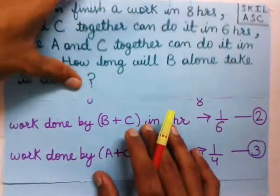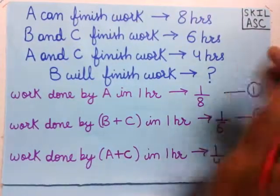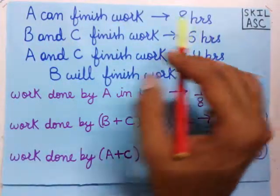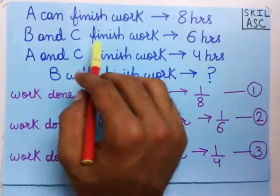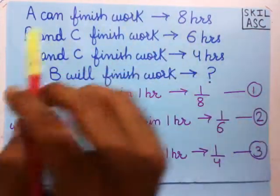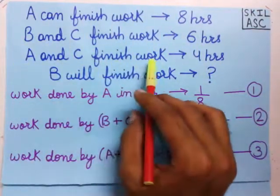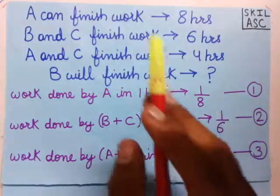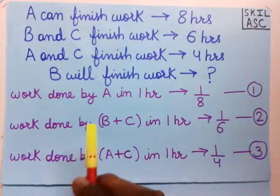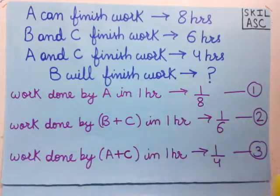In the question we are given that A can finish the work in 8 hours, B and C together can finish the work in 6 hours, and A and C together can finish the work in 4 hours. We have to find how long B will take to finish the work.